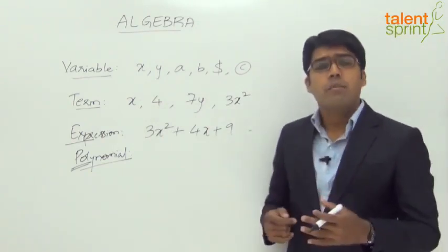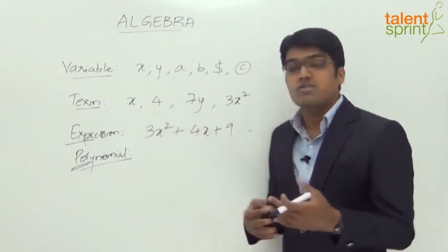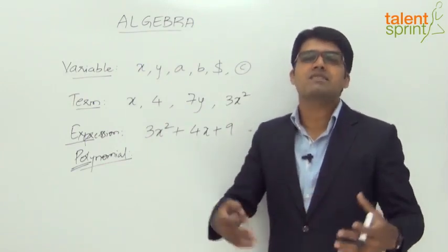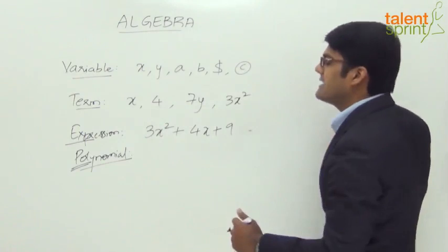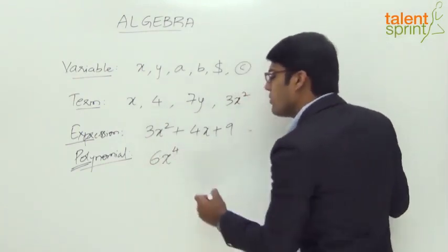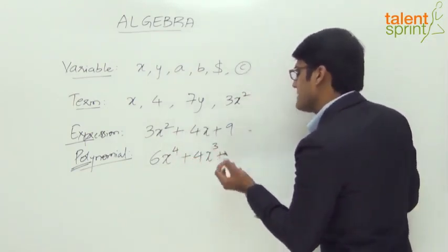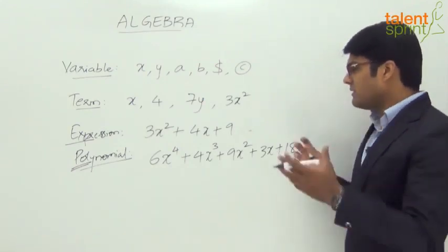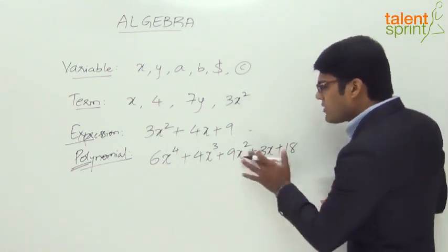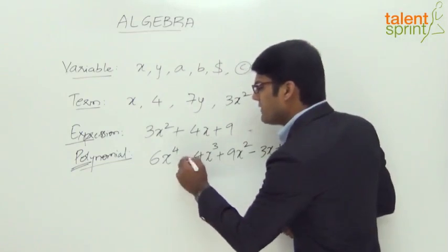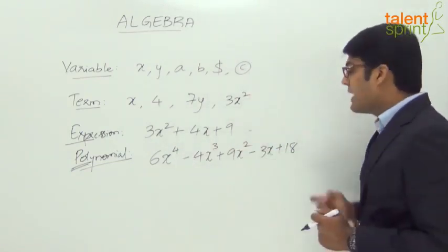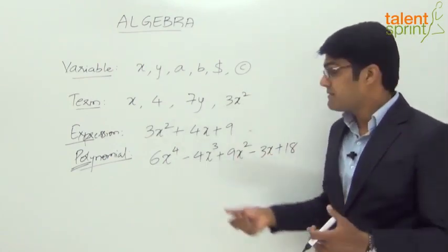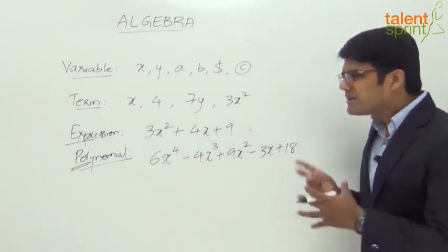So 3x squared plus 4x plus 9 is a polynomial. A polynomial has numbers, variables, and exponents. What are exponents? Exponents are nothing but powers, like x squared — x to the power of 2. For example, we can say 6x to the power 4, plus 4x cubed, plus 9x squared, minus 3x, plus 18. That is a polynomial — we have got different terms, numbers, variables, and exponents such as x power 4, x cube, x squared, and so on.